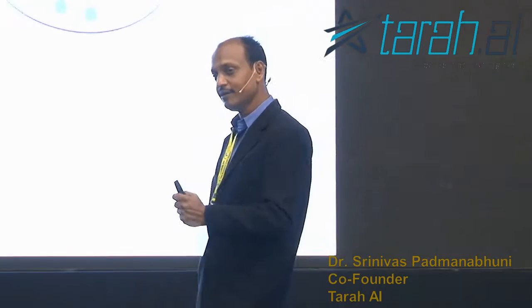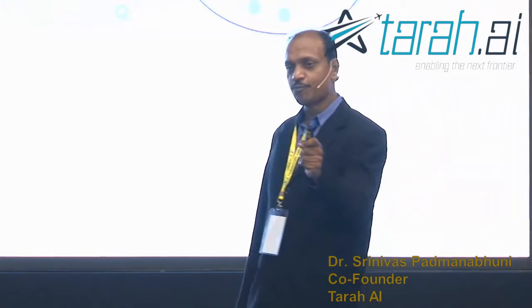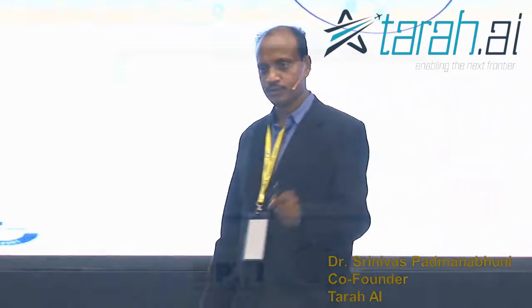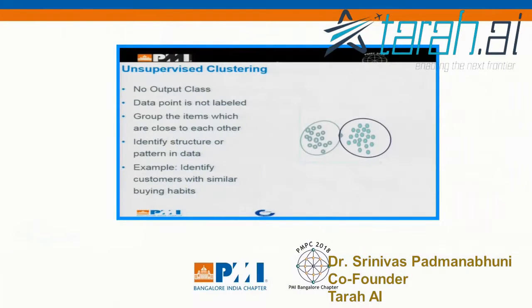What is unsupervised learning? There is no output variable — you're looking at some kind of patterns. The simplest kind of pattern is to group similar items into one group. That's called clustering.